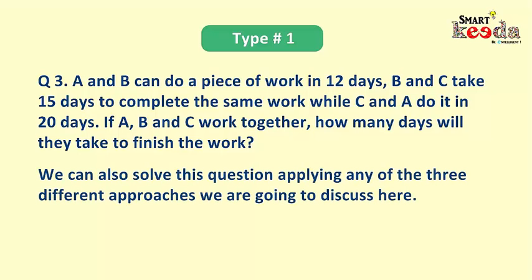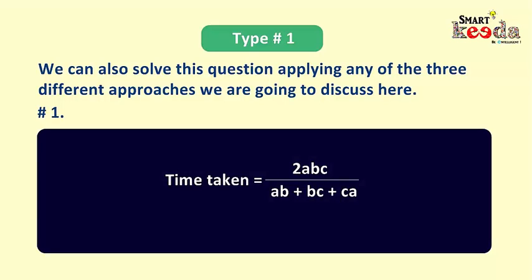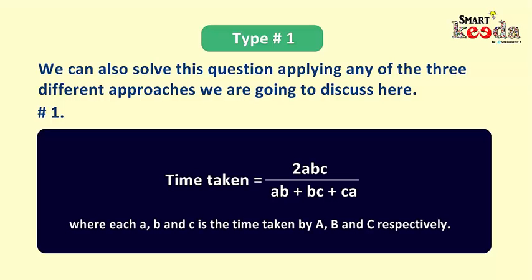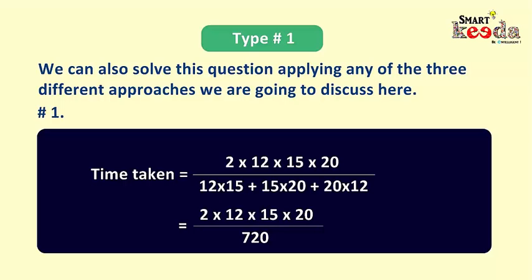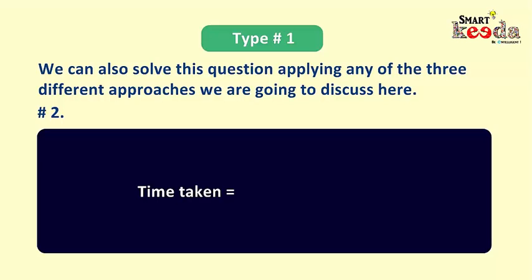We can solve this with three approaches. The first: time taken = 2abc / (ab + bc + ca), where a, b, c are times taken by AB, BC, and CA pairs respectively. Putting values: (2 × 12 × 15 × 20) / (12×15 + 15×20 + 20×12) = (2 × 12 × 15 × 20) / (180 + 300 + 240) = 7200 / 720 = 10 days.